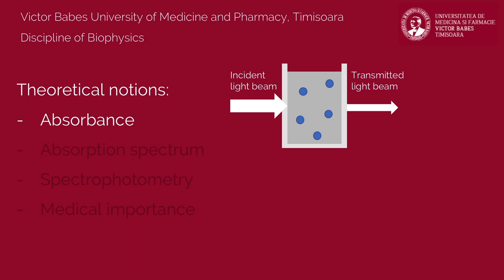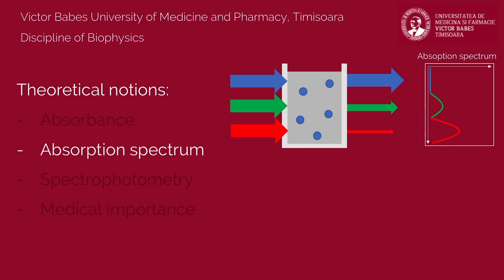The physical quantity that quantifies the light absorption is called absorbance. In the case of polychromatic light, different colors are being absorbed differently, depending on the composition of that substance. Thus, each transparent solution has a specific absorption spectrum, described as the variation of absorption with light's wavelength.